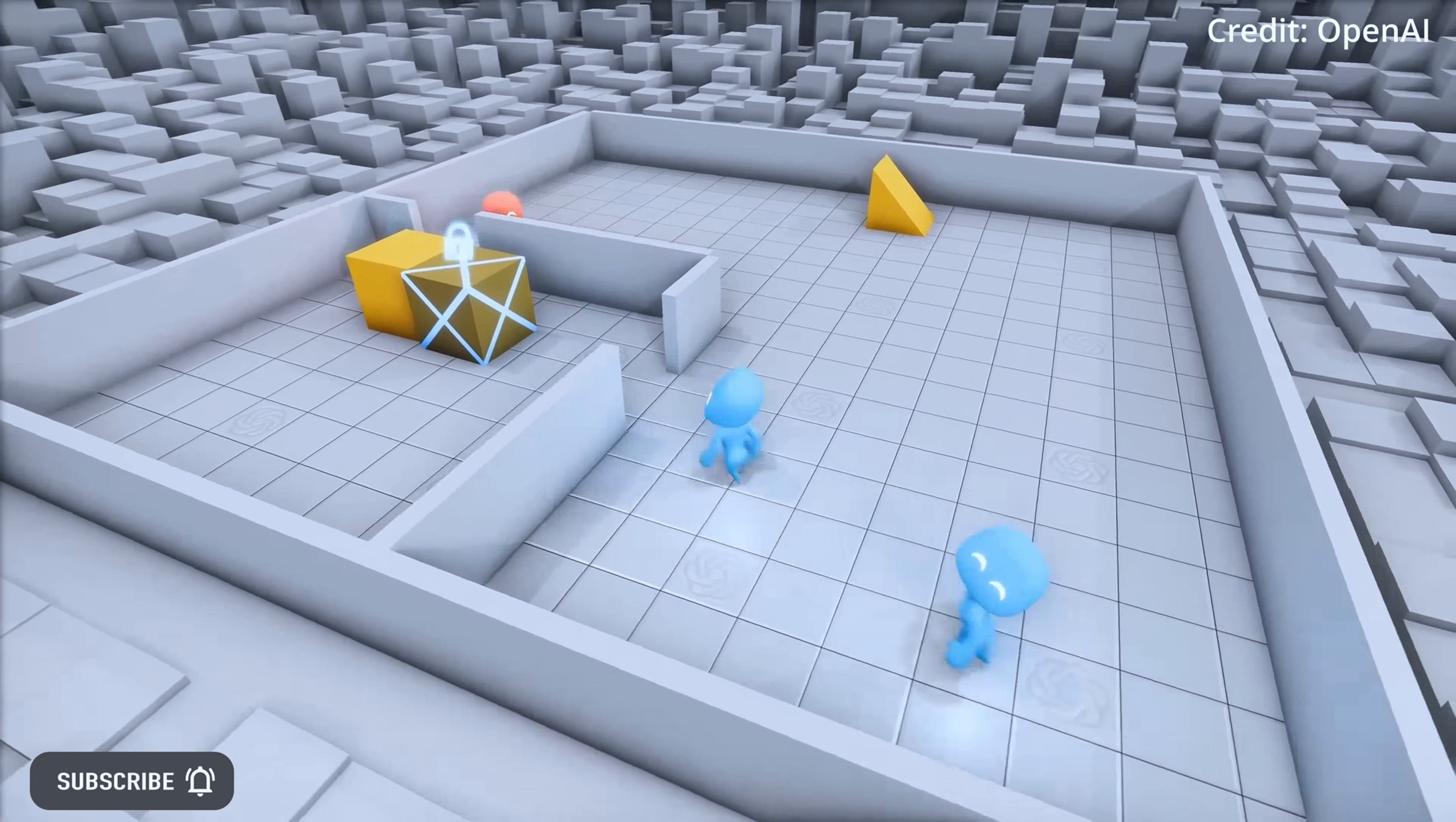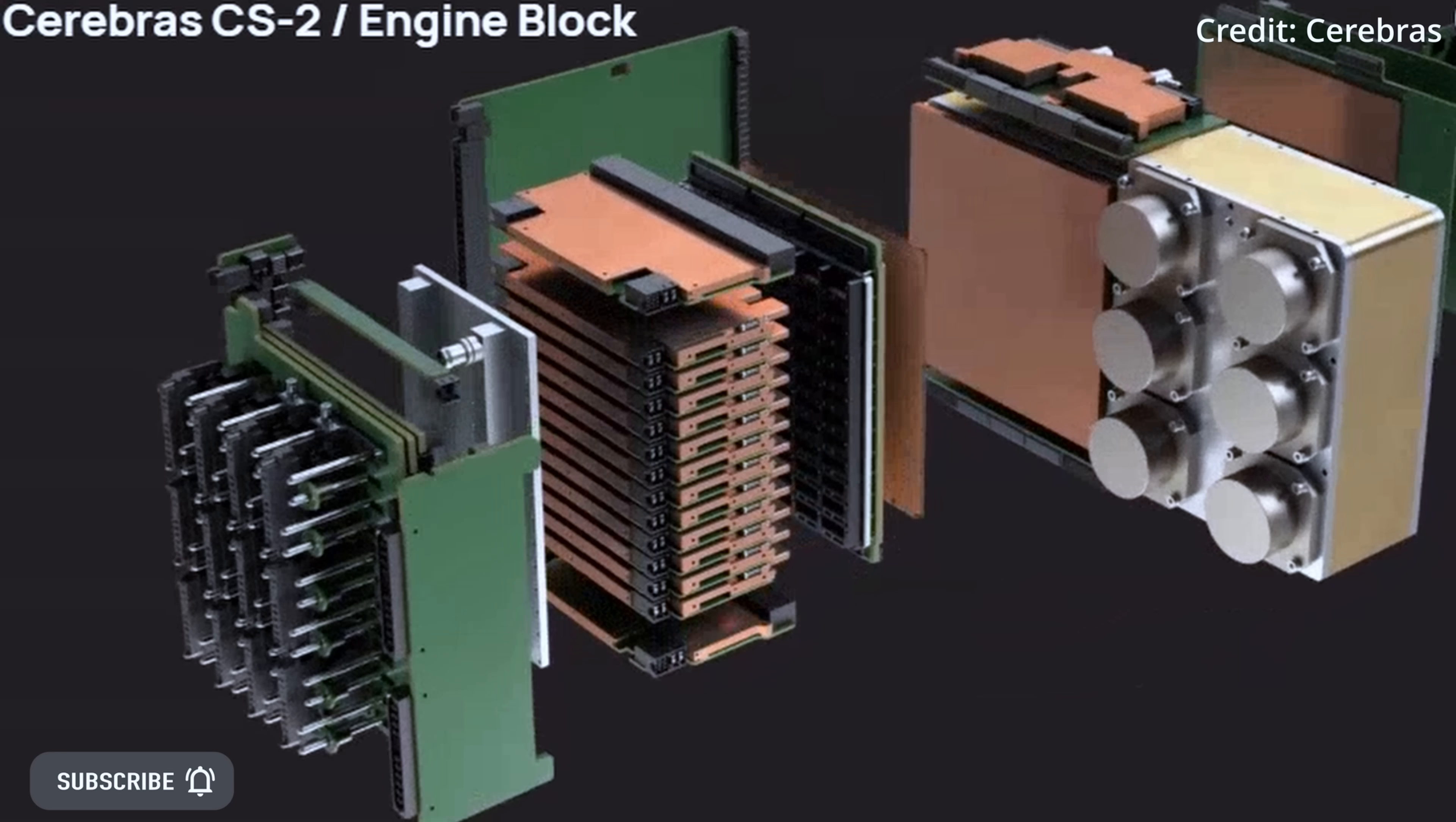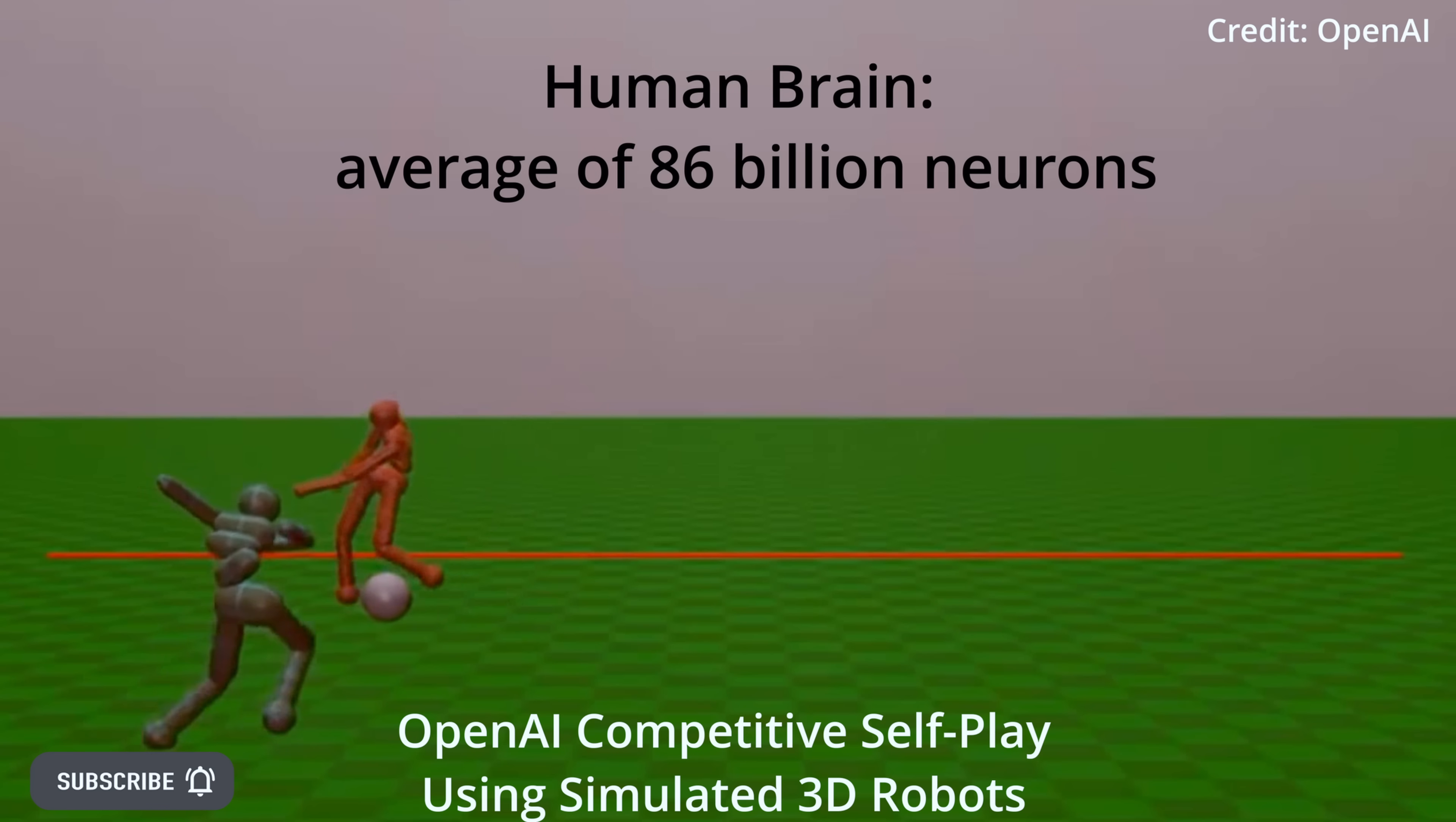This jaw-dropping parameter count is possible because of recent artificial intelligence supercomputing advances from the Cerebras brain-scale chip cluster hardware, which is able to run a neural network with 120 trillion connections. For reference, the human brain has an average of 86 billion neurons.